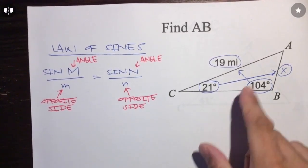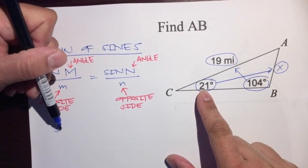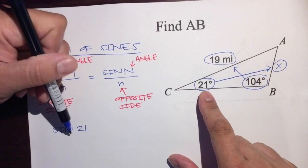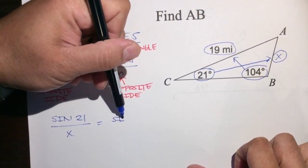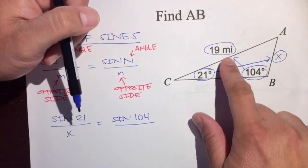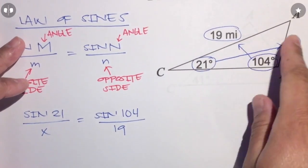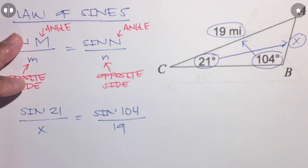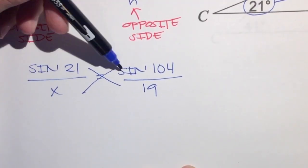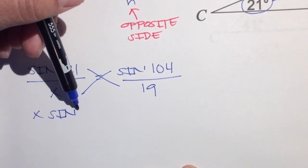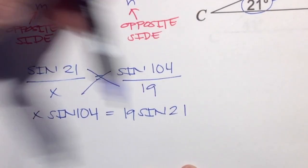Let's use the Law of Sines to find X. We have 21 degrees, so let's set up our proportion: sine of 21 over its opposite side X, set equal to sine of 104 over its opposite side, which is 19. We have angle over opposite side equals sine of angle over opposite side. Now let's do some algebra — cross multiply: X times sine of 104 equals 19 times sine of 21.